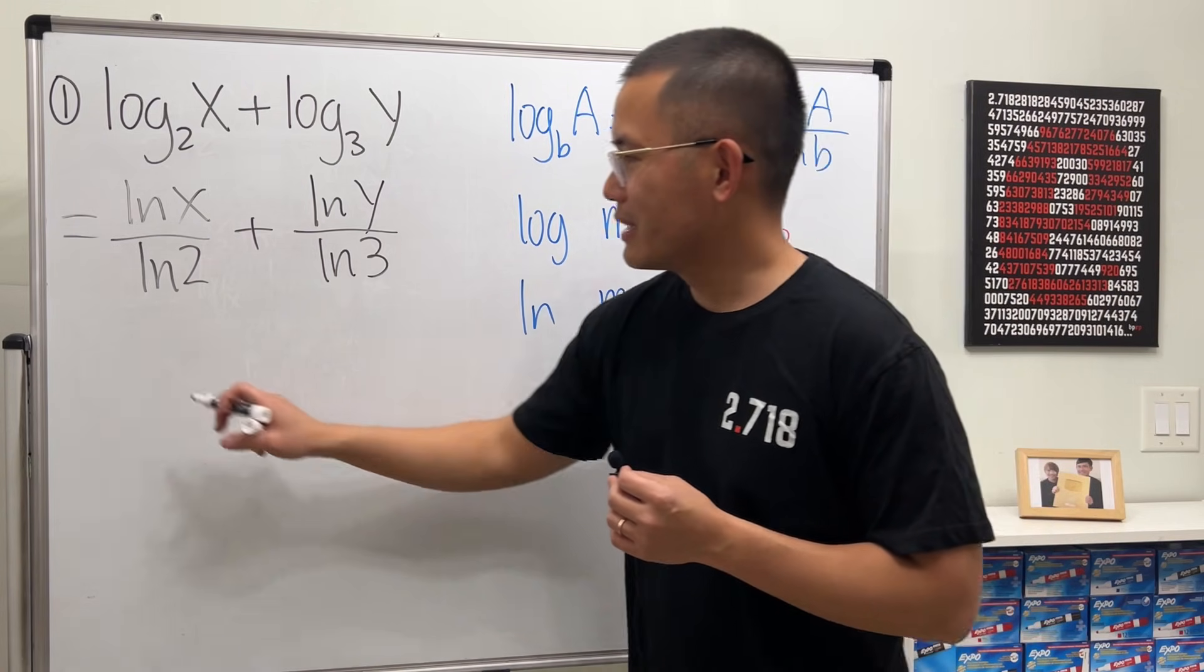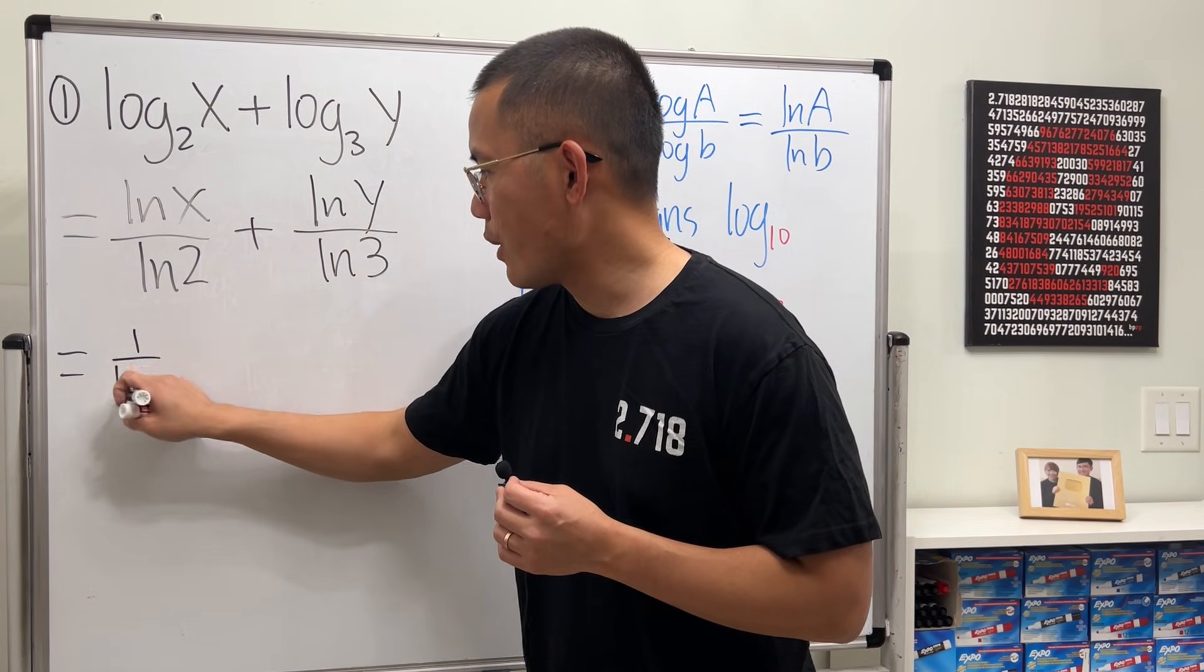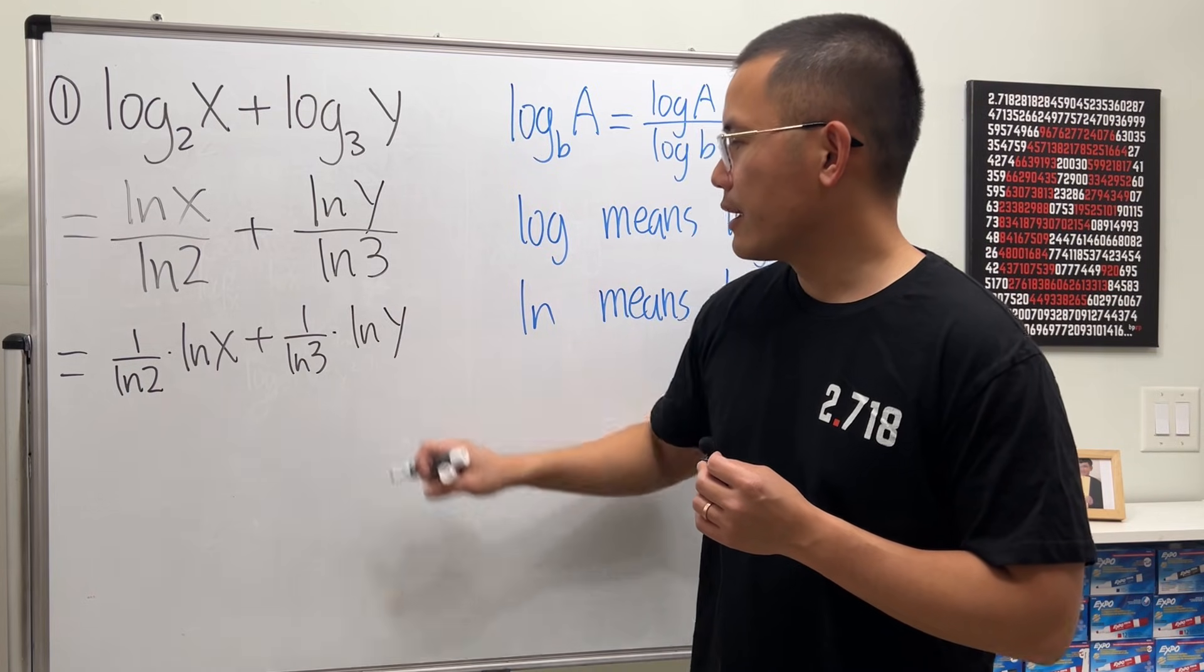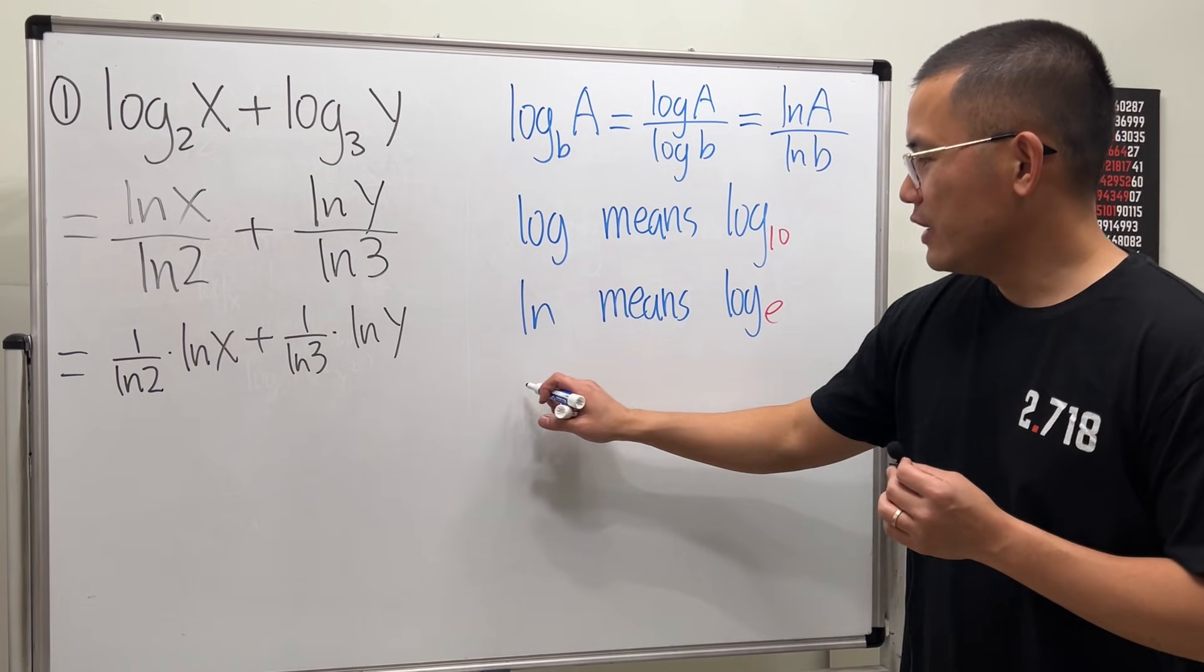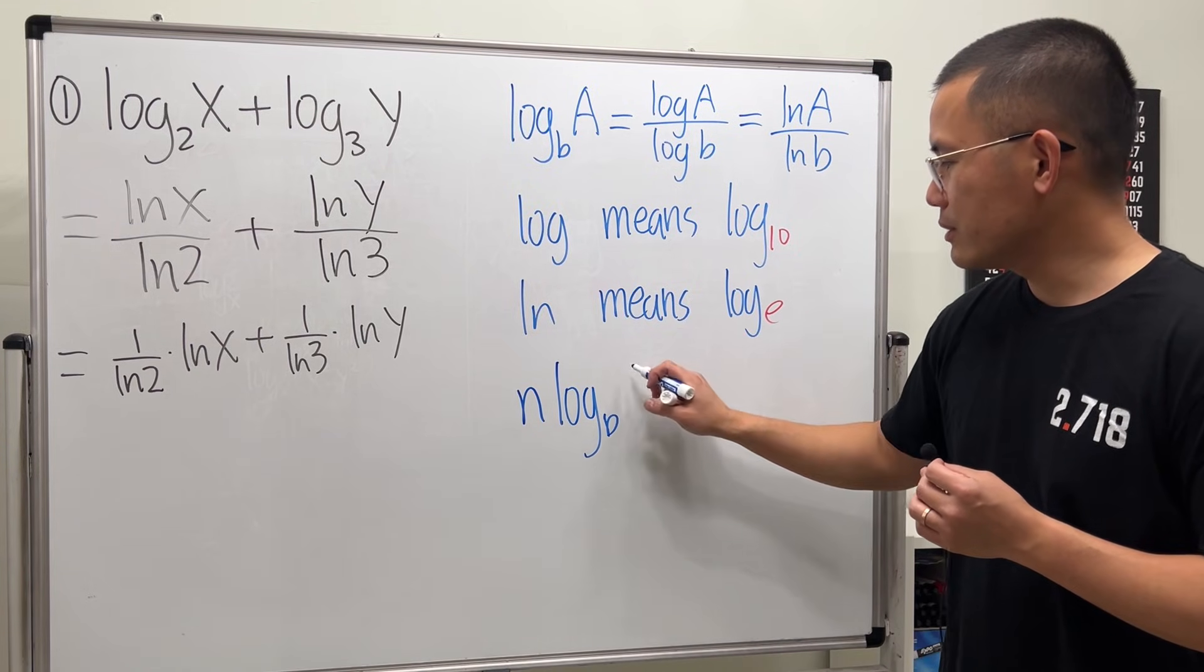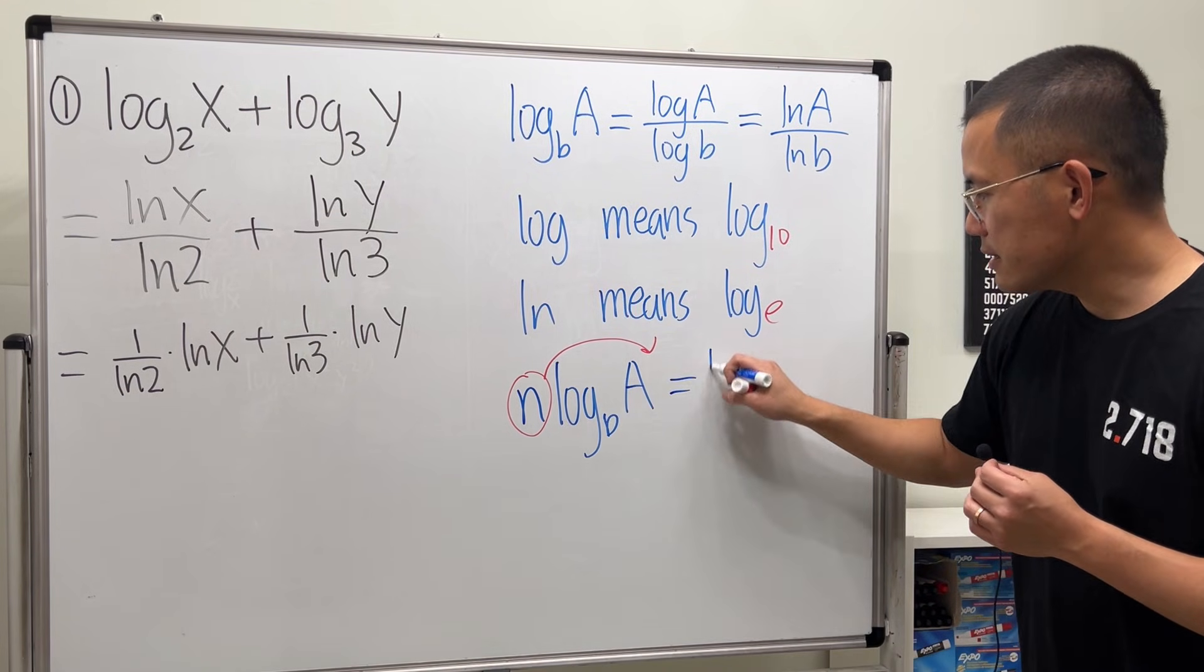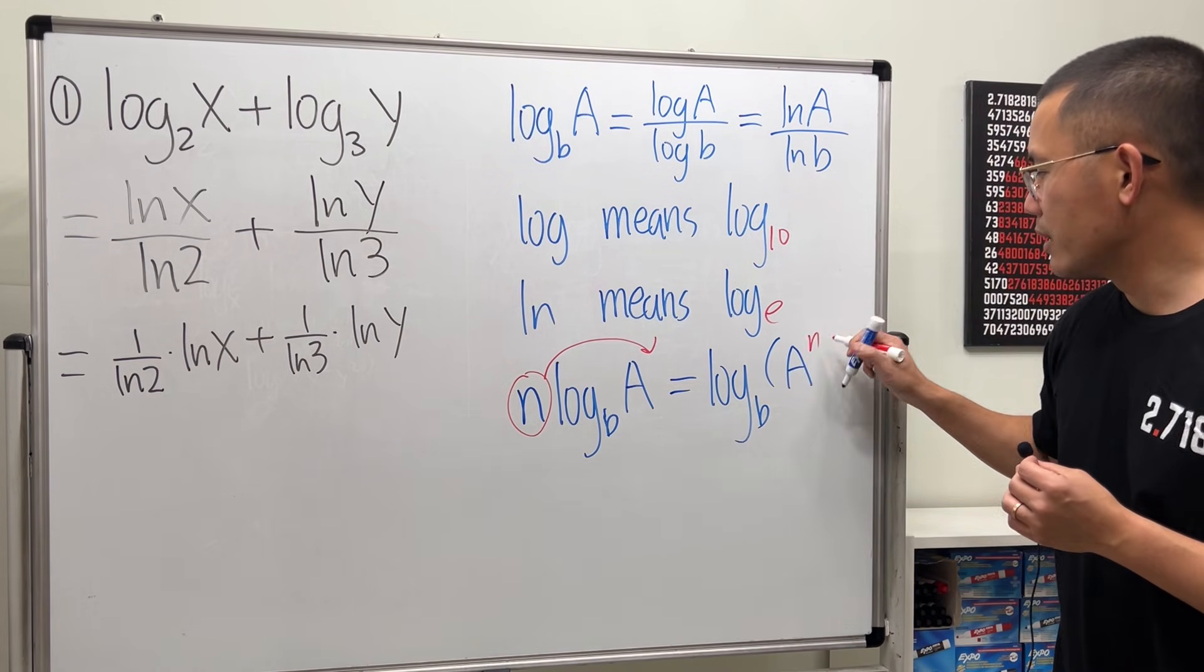The ln 2 is just a number on the bottom, so we can look at it as 1 over ln 2 times ln x. Likewise, we can do the same here. So we have a number in front of the logarithm. What can we do? Well, that's another log property, isn't it? If we have some number n times log of whatever base you're talking about, and then the input is A, we can put this number back up here and it becomes the exponent inside. This gives us log base b, and then A to the nth power.